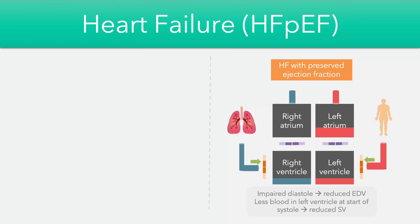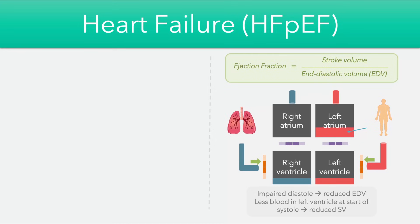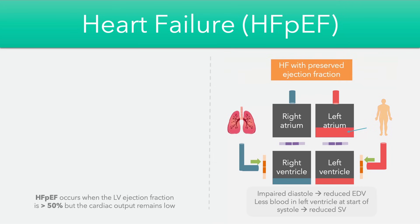However, because the left ventricle had less blood at the start of systole, we still end up with a reduced stroke volume — the blood that remained in the atrium was never transferred into the ventricles. Comparing this with our equation, the end diastolic volume has gone down because diastole is impaired, and the stroke volume has also subsequently decreased. These two changes counteract each other, resulting in a preserved ejection fraction — defined as a left ventricular ejection fraction above 50% but with a low cardiac output.